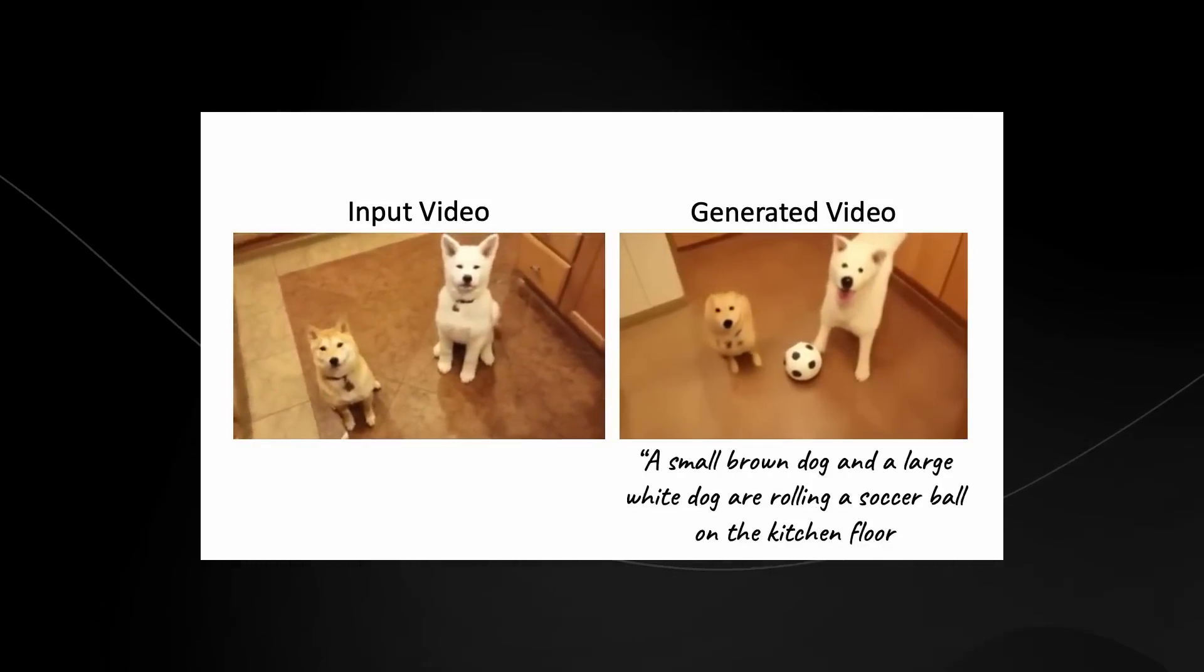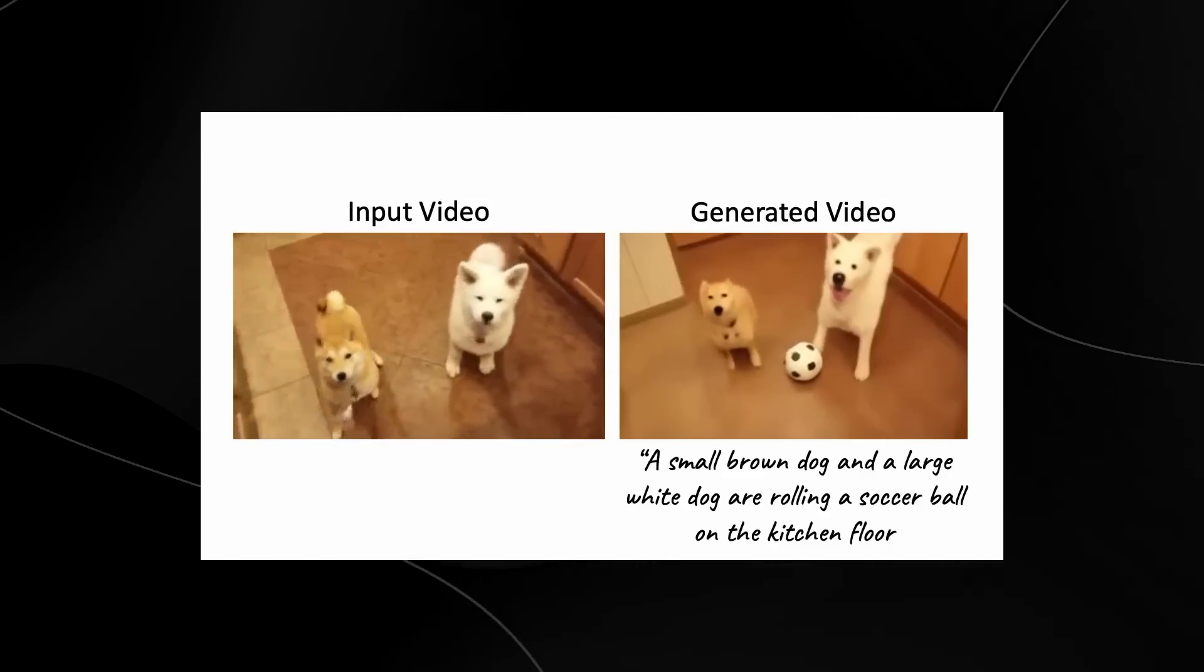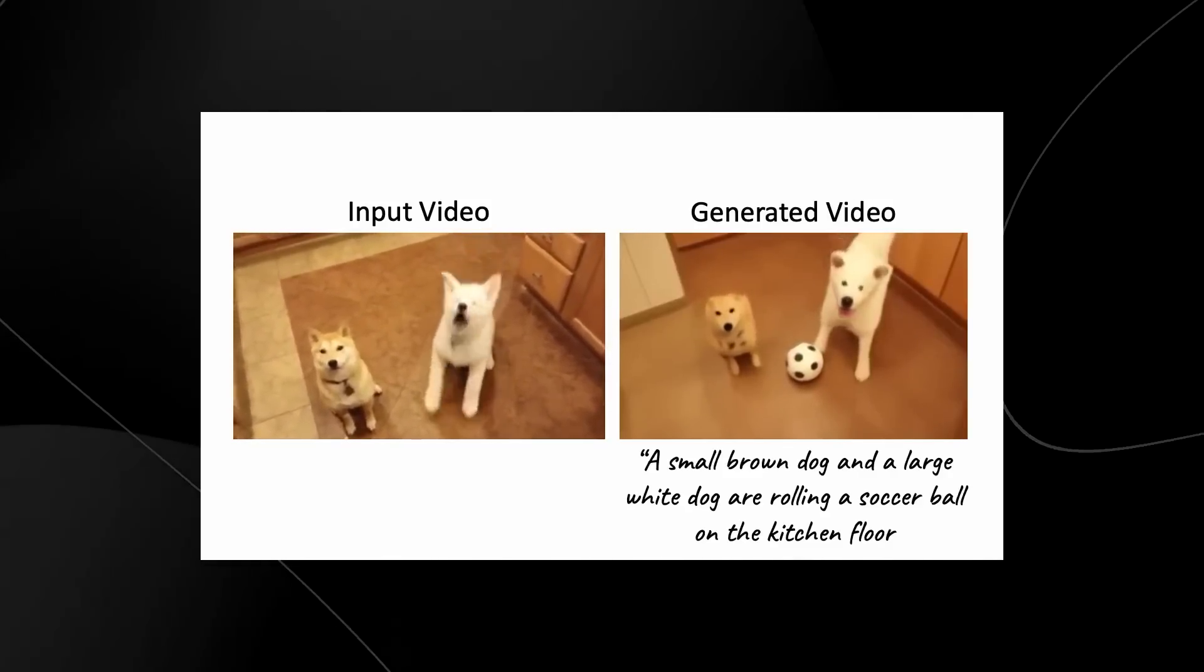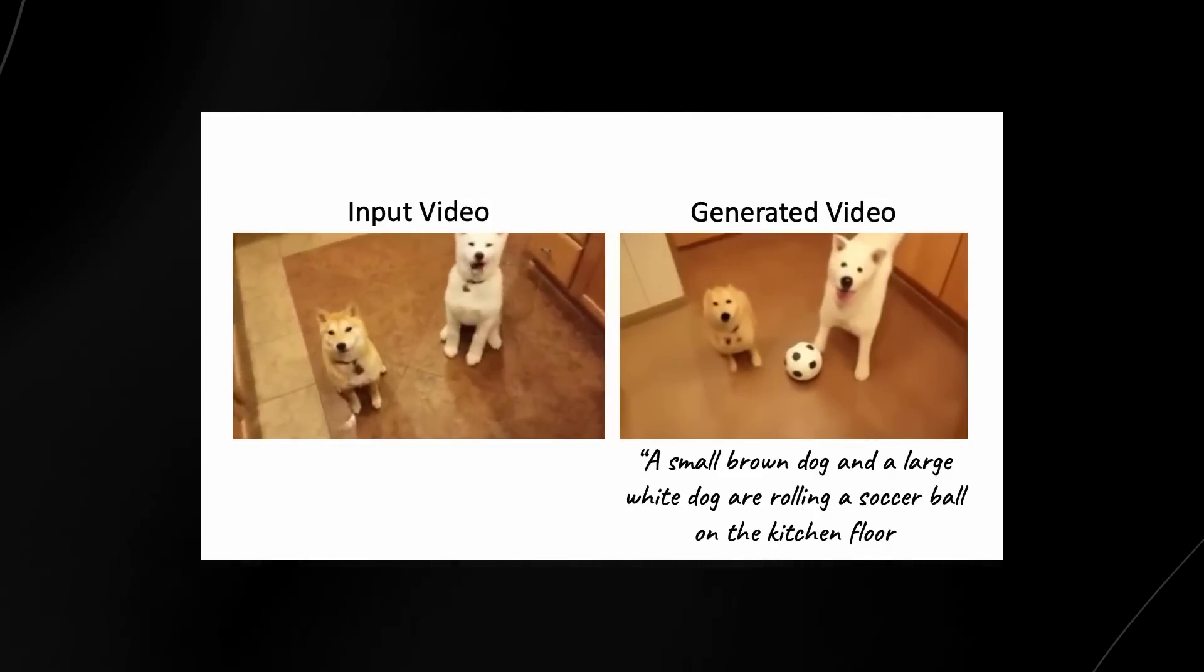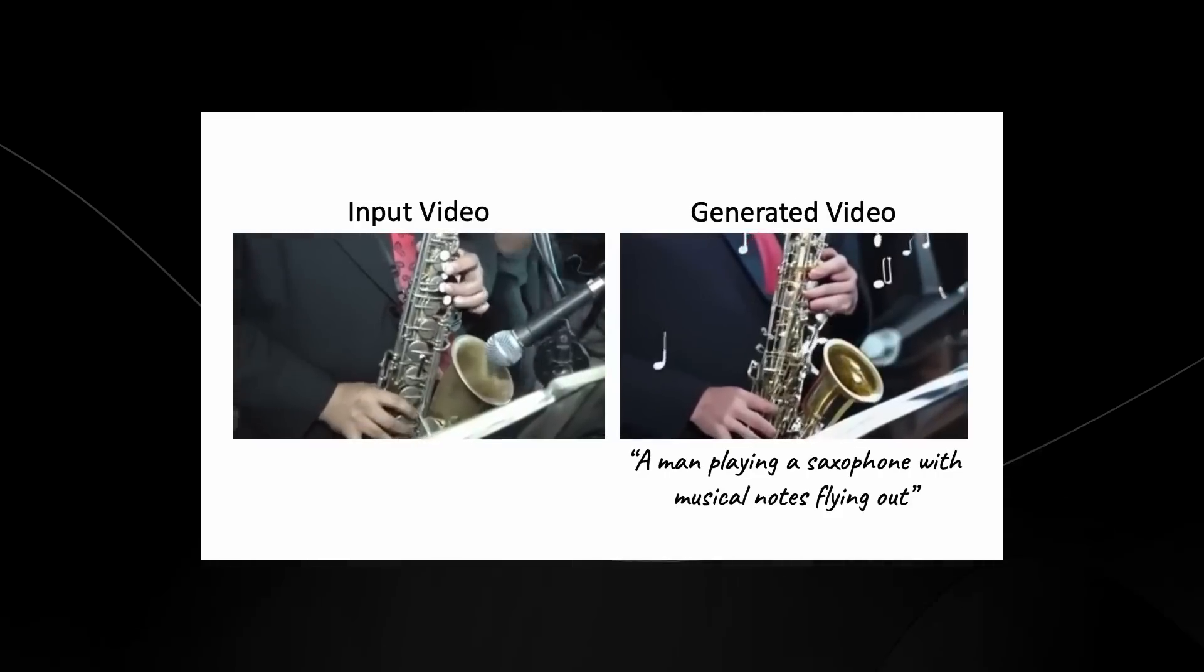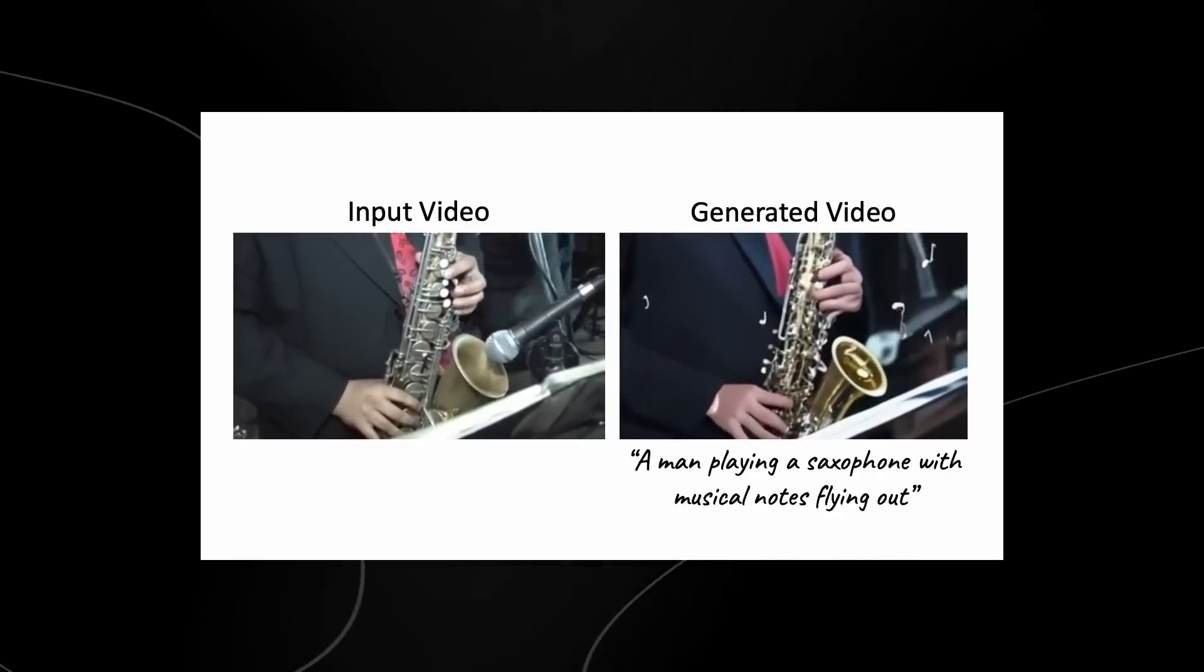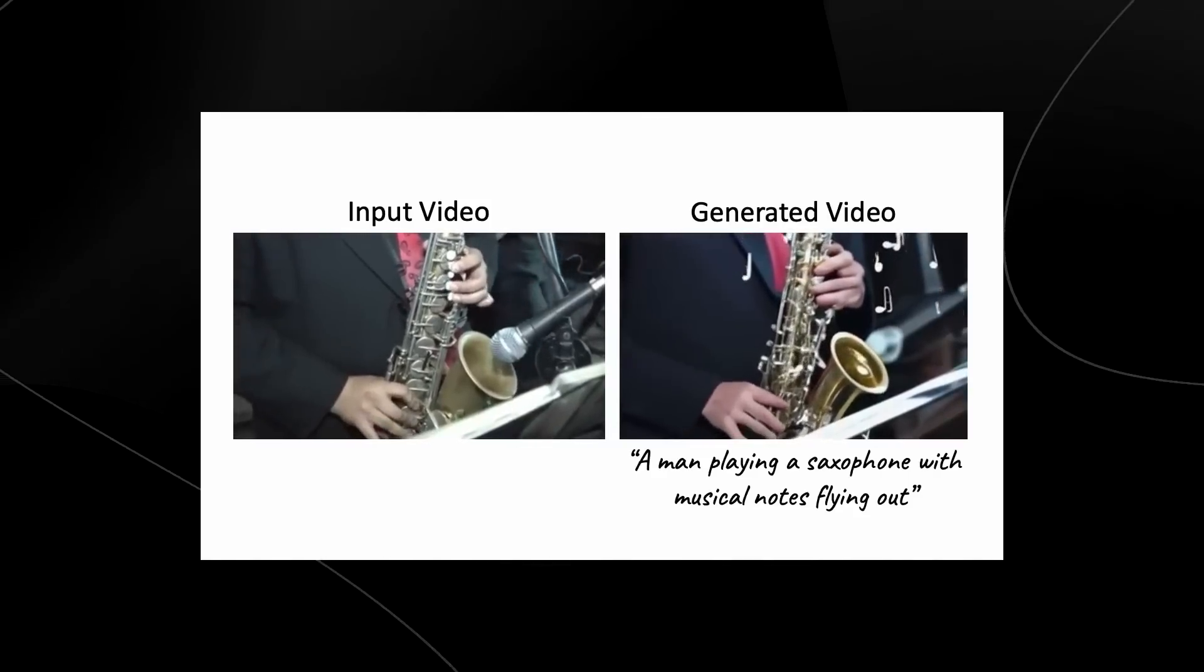And it definitely shows multiple applications where this stuff can be used. You can also see right here that it says a small brown dog and a large white dog are rolling a soccer ball on the kitchen floor. And you can see that's given from the prompt of these two animals. And it just goes to show that even with an input video, you can quickly edit stuff in real time with this software. And I just wonder how much this is going to develop.